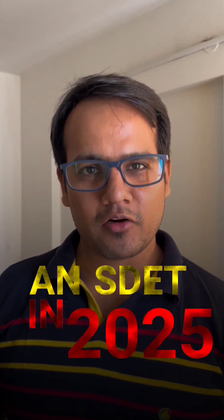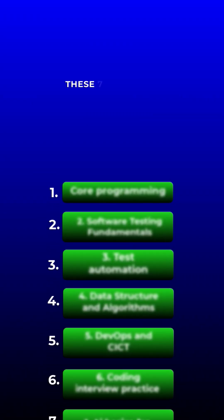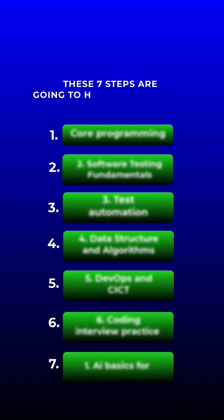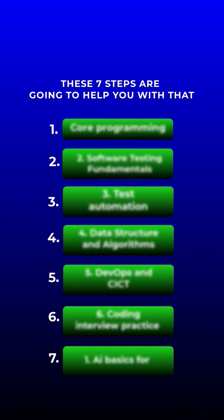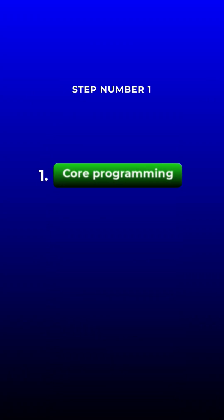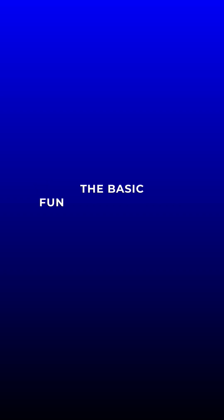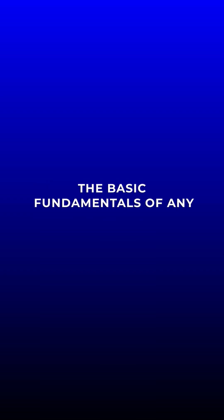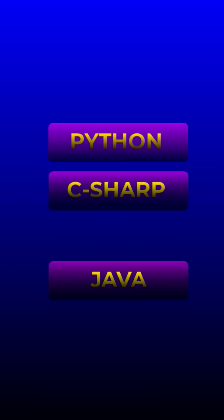Want to become an SDET in 2025? These 7 steps are going to help you with that. Step 1: Core Programming. You need to learn the basic fundamentals of any particular programming language like Python, C Sharp, or Java.